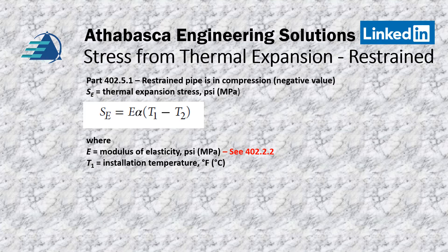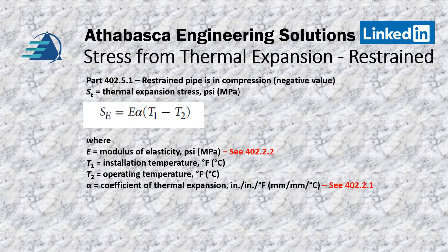Installation temperature is very important. A lot of the time when we do our checking, we find that the installation temperature is not clearly understood. It's the point where all final components are put together and the pipe is locked up and ready to go. Defaults on programs like Caesar set that at 21 degrees, but if you're setting this up outside in the wintertime, this becomes a big deal. The operating temperature is typically the upper maximum recommended temperature. The coefficient of thermal expansion has a fixed value for carbon steels, just like elastic modulus — you would go to section 402.21.